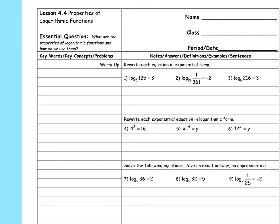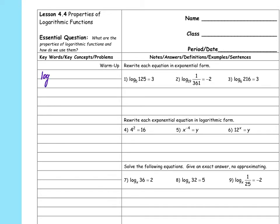In the warm-up, we're using the rule that says log base a of x equals y if and only if a to the y equals x. We want to go back and forth between the two forms. If it's written as a logarithm, I want to write it as an exponential — the base of the logarithm becomes the base of the exponent. So five to the third equals 125, and 19 to the negative two equals one over 361.